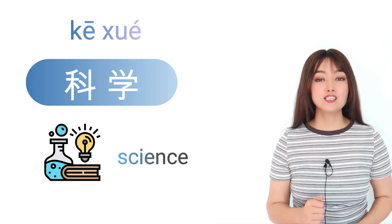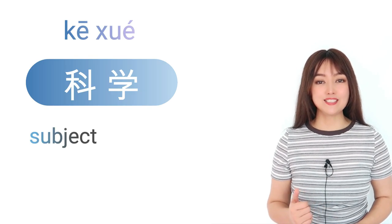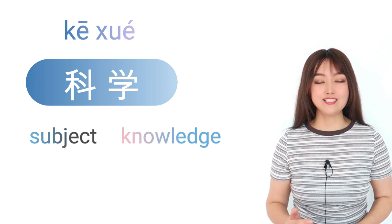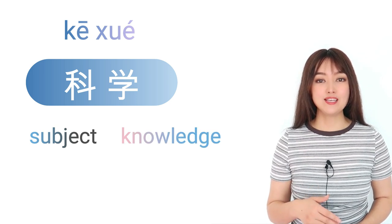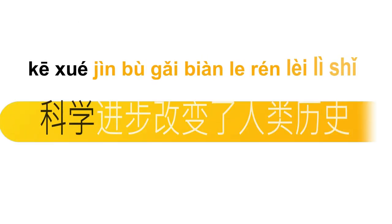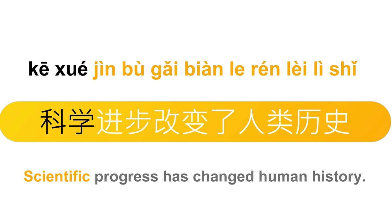科学是 science。科的意思是 subject，学的意思是 knowledge。科学，science。科学进步，改变了人类历史。Scientific progress has changed human history.